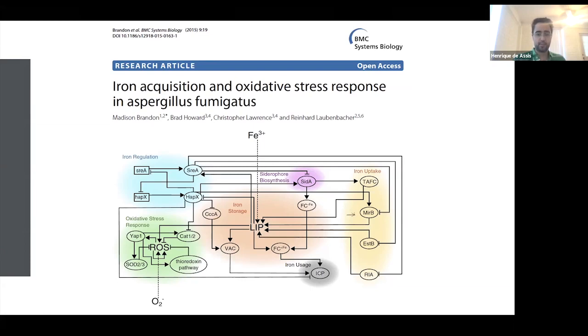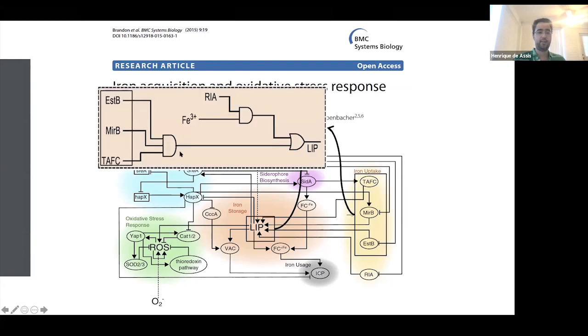For the fungi to acquire iron via TFC, it needs TFC, it needs mirB which is the receptor for FC, and estB which is the protein that processes FC inside the cytoplasm of the fungi. This was a Boolean network, a standalone work. We modified this Boolean network so that it could work in the context of an agent-based model.